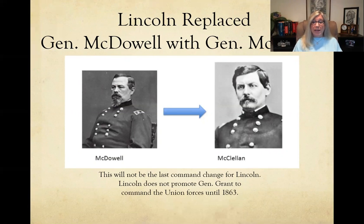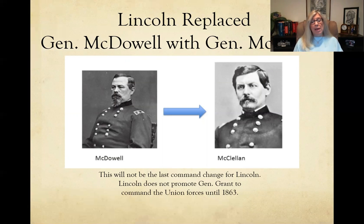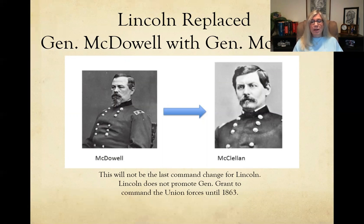Lincoln, frustrated with McDowell, replaces him with General McClellan. McClellan is very careful, very cautious — a meticulous planner who methodically plans his approach. But McClellan is way too cautious. He's never ready to fight, always saying he needs more resources, more soldiers, and never finishes the job. It drives Lincoln crazy.